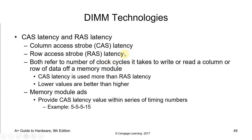The lower the CAS latency, the better. A RAM kit with CAS 16 takes 16 RAM clock cycles to complete the task. So when comparing RAM kits, lower CAS latency values indicate better performance.